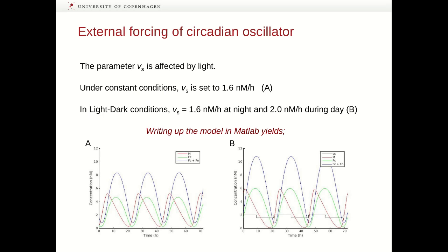Now, we can try to apply an external forcing of this circadian oscillator. As we saw before, the production of mRNA is influenced by light. And as the parameter VS determines the rate of production of mRNA, we can try to manipulate this parameter value. So under constant conditions, the VS parameter is set to 1.6 nanomolar per hour. And then you get oscillations as shown here in A.